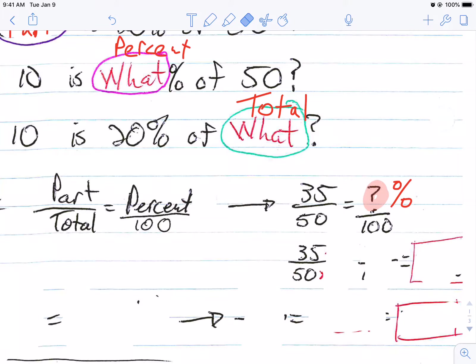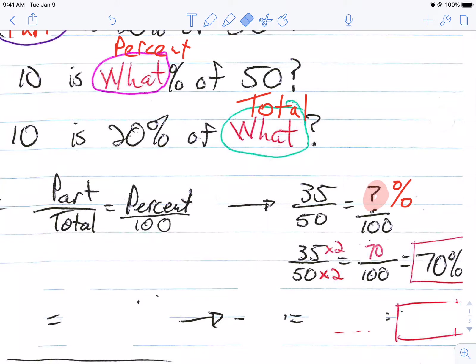So there's 35 over 50. You need to make 50 into 100. You could just divide 35 by 50, or you could make 50 into 100 by multiplying by 2 and multiply the top by 2, getting 70. So the answer is that the uncle has been to 70% of the states.